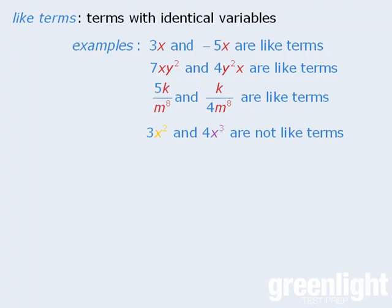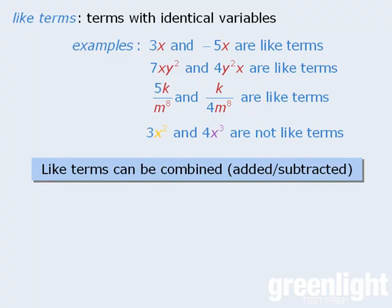Now the important point about like terms is that we can combine them through addition or subtraction. This should make sense to us. If the variables are identical, then they must have the same value, and as such we should be able to combine them.